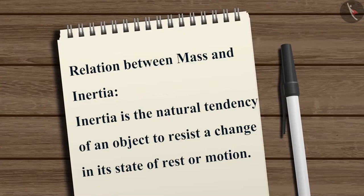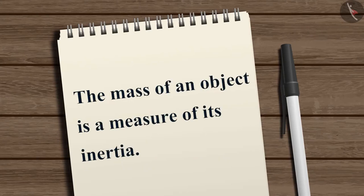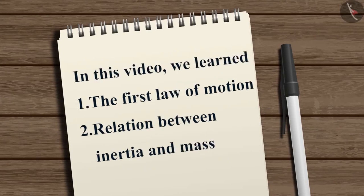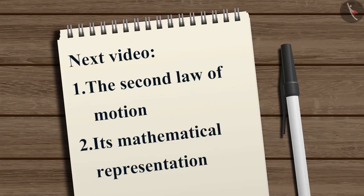The relation between mass and inertia can be stated as follows: inertia is the natural tendency of an object to resist a change in its state of rest or motion, and the mass of an object is a measure of its inertia. In this video we learned about the first law of motion and the relation between inertia and mass. In the next video we will learn about the second law of motion and how it is represented mathematically.